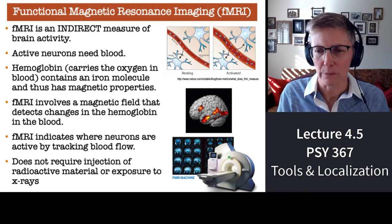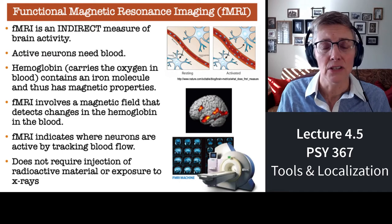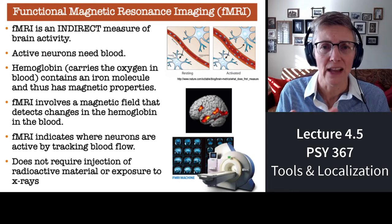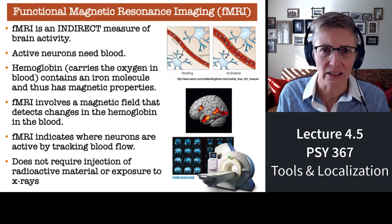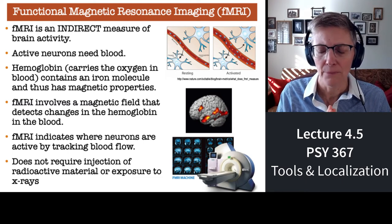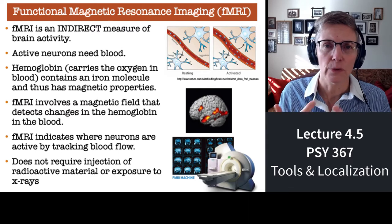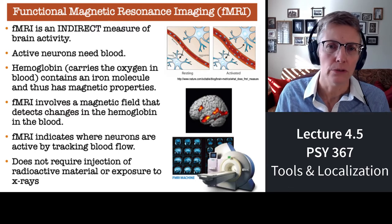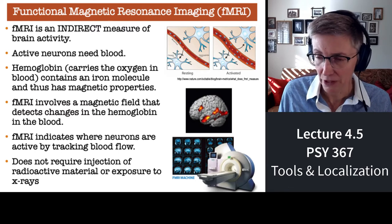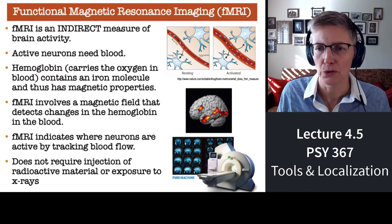So fMRI is an indirect measure based on blood flow. The nice thing about fMRI is you're not required to have anything injected into you, which happens with other types of brain imaging, nor does it require an x-ray. fMRI is nice in both of those ways.